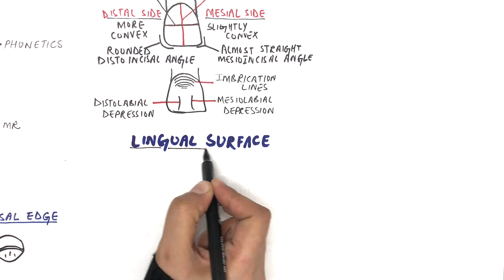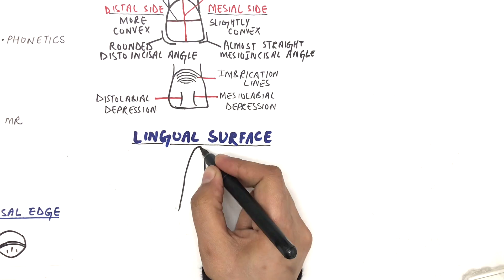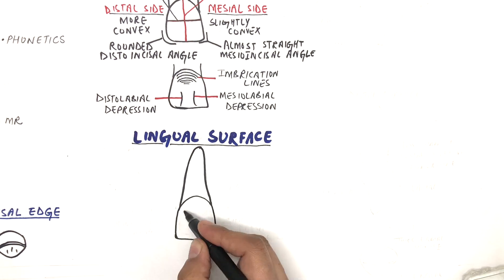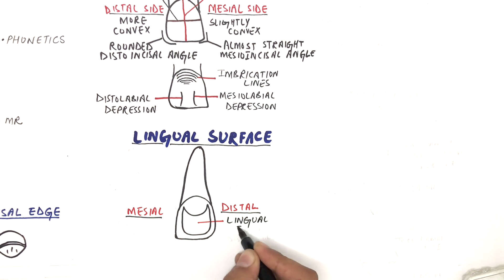Unlike the smooth labial surface, the lingual surface of the crown is irregular in shape and possesses convexities and a concavity. The concavity possesses a scooped out appearance at the middle and incisal third. This concavity is termed lingual fossa.